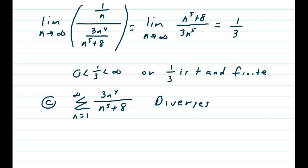And using L'Hopital's rule or just seeing that the highest powers match up, we get a limit of 1 third. And then we say that 0 is less than 1 third is less than infinity, or that 1 third is positive and finite.